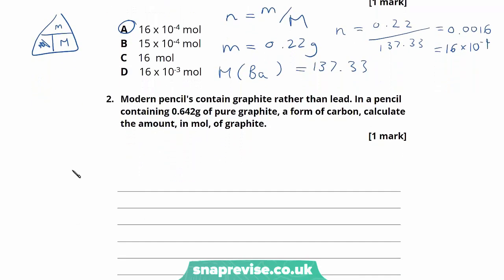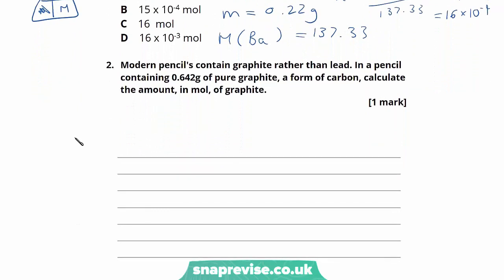The second part of the question says, modern pencils contain graphite rather than lead. In a pencil containing 0.642 grams of pure graphite, a form of carbon, calculate the amount in mole of graphite. So this question is asking us to calculate the amount in moles of graphite. And we know we have 0.642 grams of graphite. So we can go ahead and write in what we know. We know that the number of moles is what we want to find. The mass is 0.642 grams.